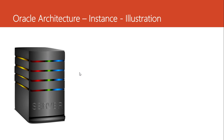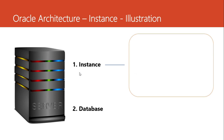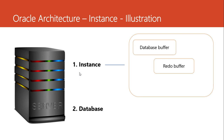We have our server where we install Oracle, and we have the instance — at the same time we have the database. These two are different. The instance is made up of different components: the memory structures and the background processes. We are going to focus on the SGA component — the database buffer that stores recently modified data blocks temporarily, the redo log buffer charged with storing SQL statements that caused a change to data, and the shared pool that is charged with storing the execution plan for SQL statements.